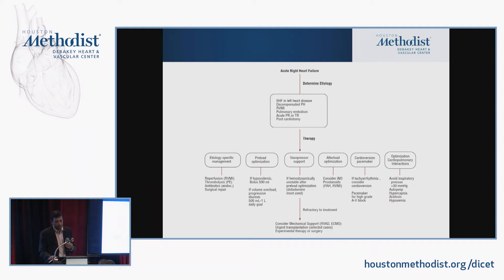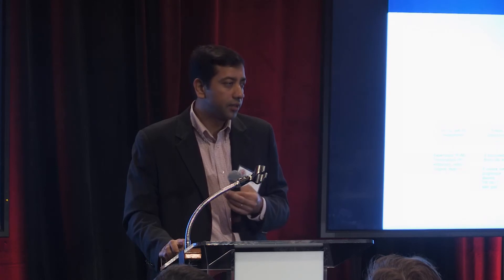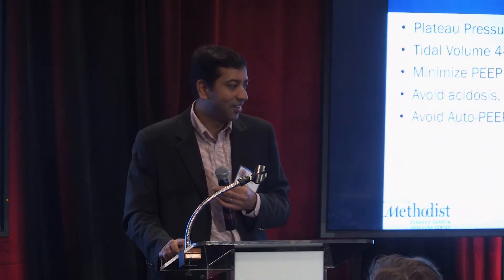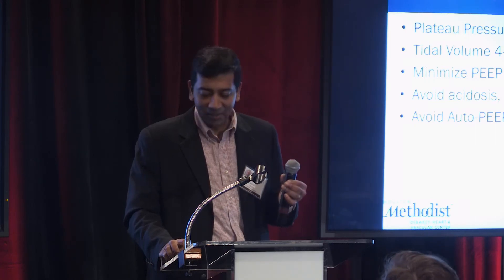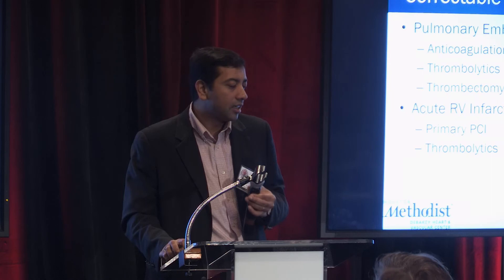The classic teaching from RV infarct is that patients are preload dependent, so you load them with fluids. But I caution that while it's okay in acute MI to give fluids, no RV will tolerate a CVP of 20. Optimize RV preload to a CVP of 8 to 12, giving fluids judiciously — 500 cc to a liter at most. Then address afterload with inhaled nitric oxide or prostacyclins, and use inotropes such as dobutamine or milrinone.